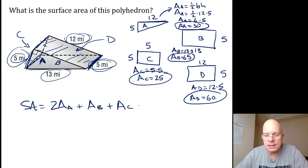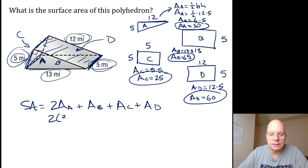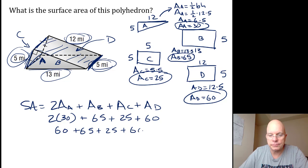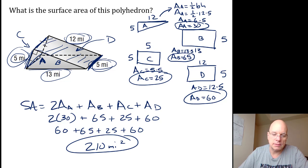So the two triangles would be two thirties, or 60 altogether for the area of the two triangles. Area B was 65, area C was 25—that was our square—and area D was 60. So 60 plus 65 plus 25 plus 60. This is 125, and another 25 is 150, and 60 is 210. The units would be miles squared because it's a total area. It's a sum of areas, and areas are two-dimensional.